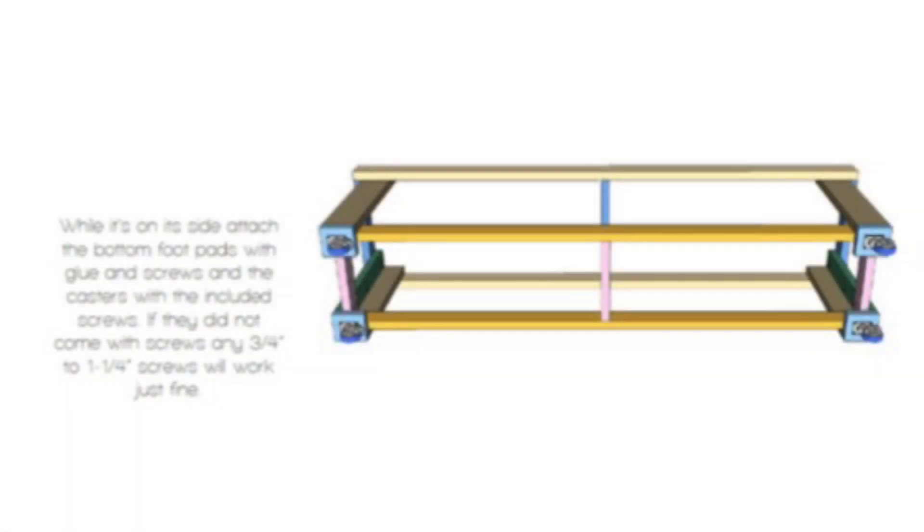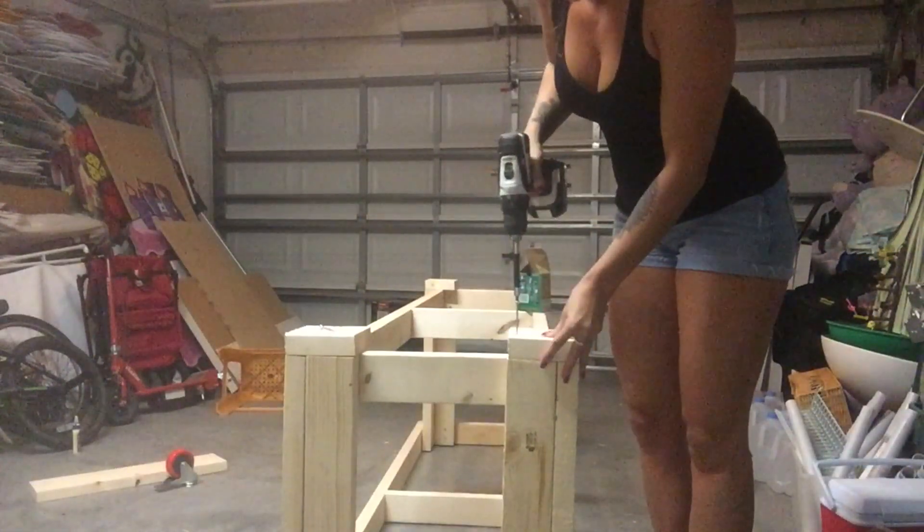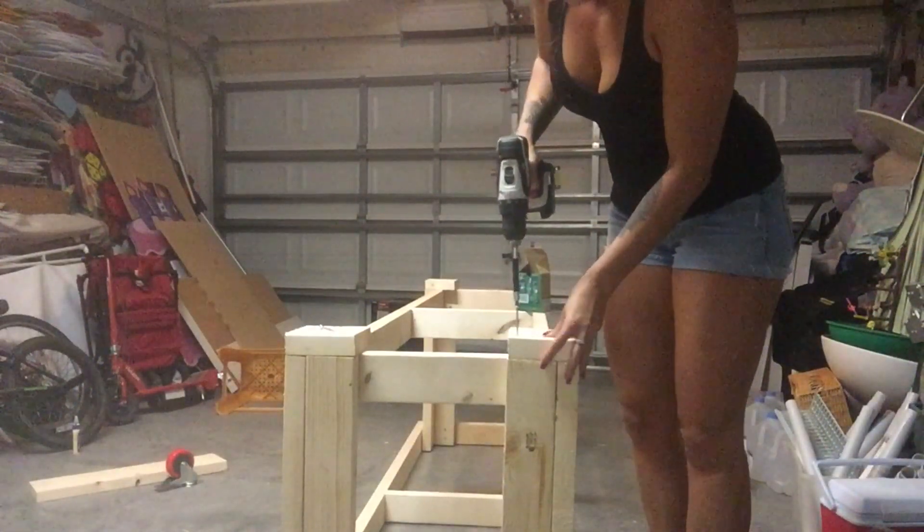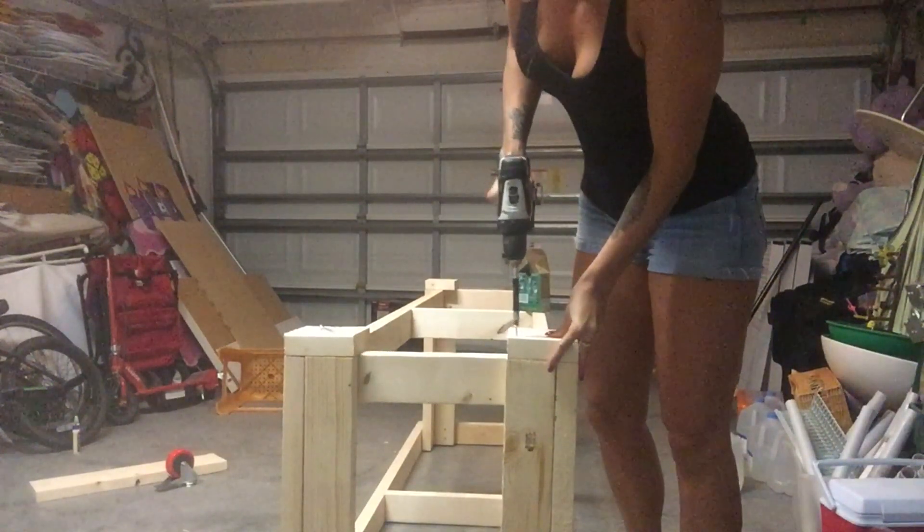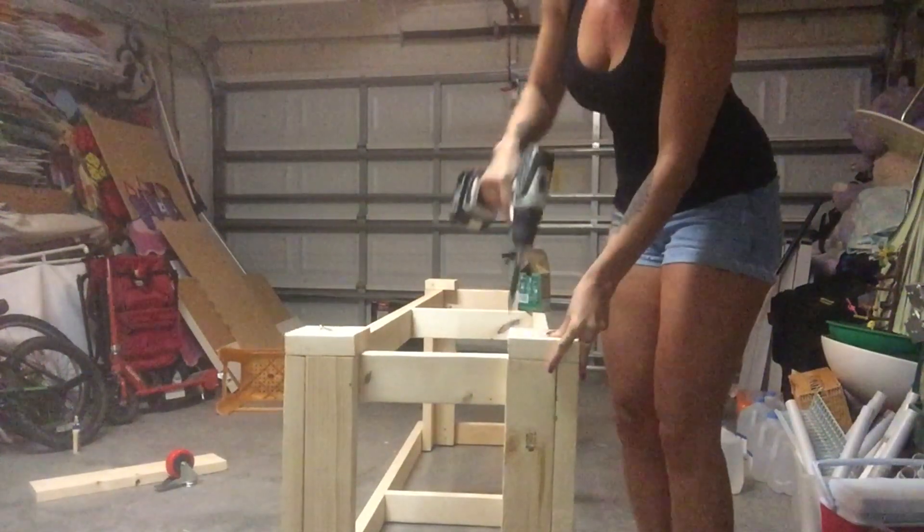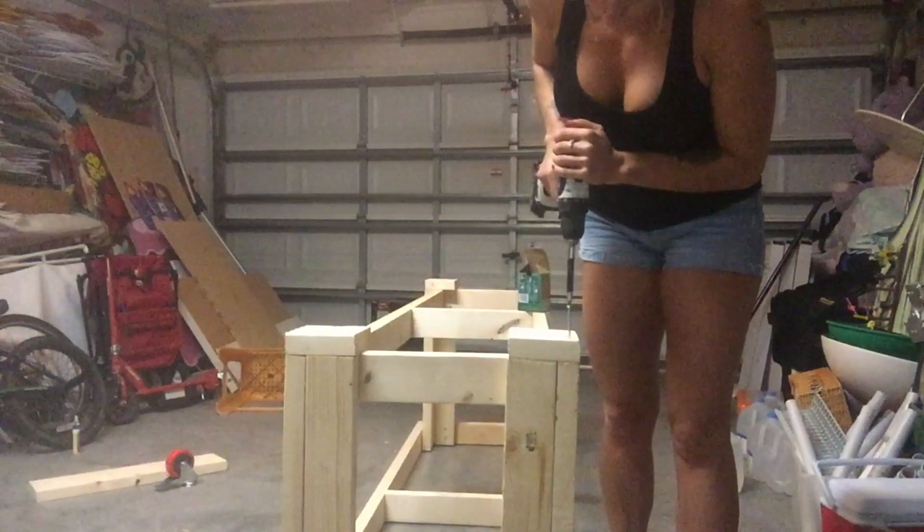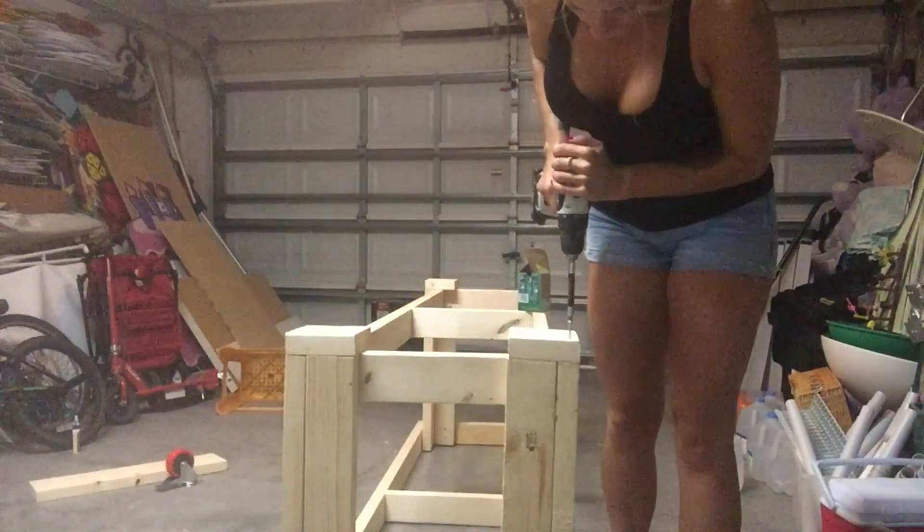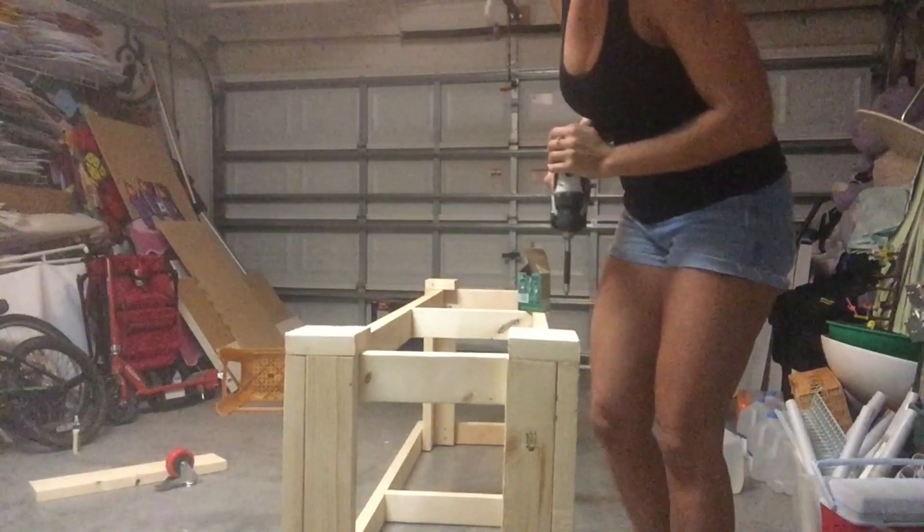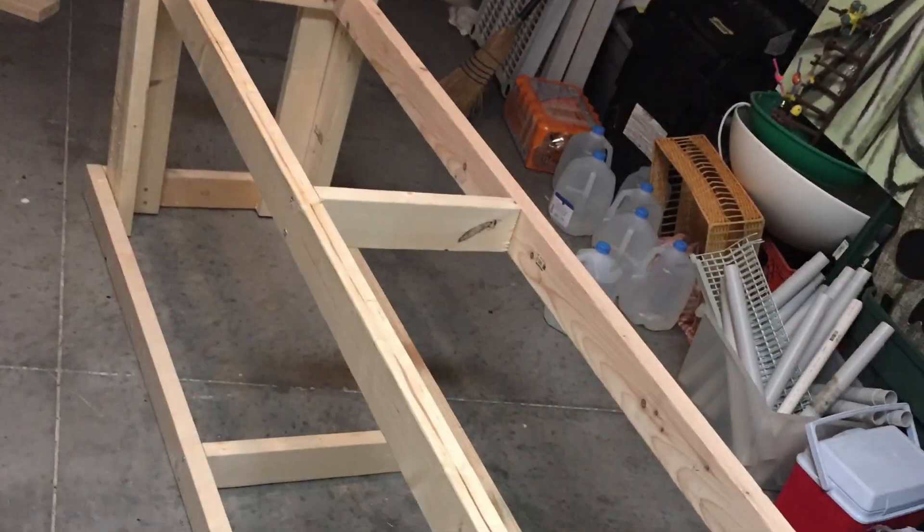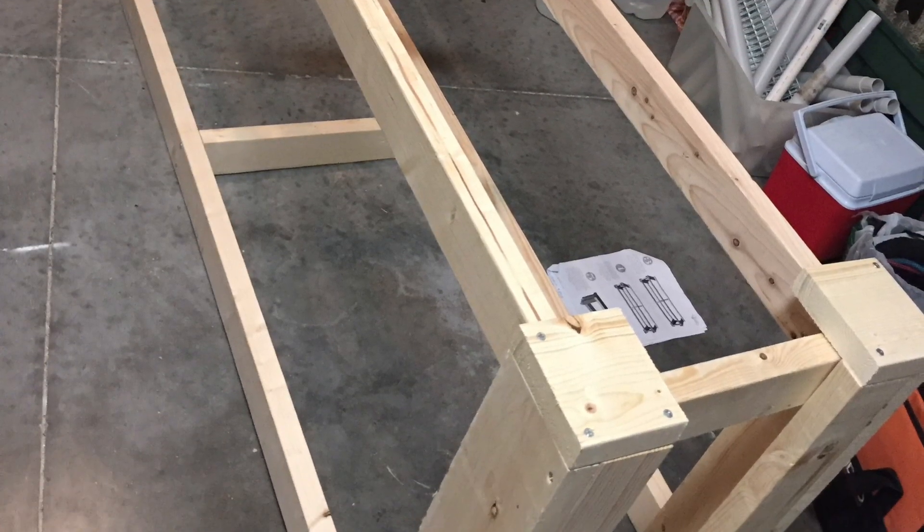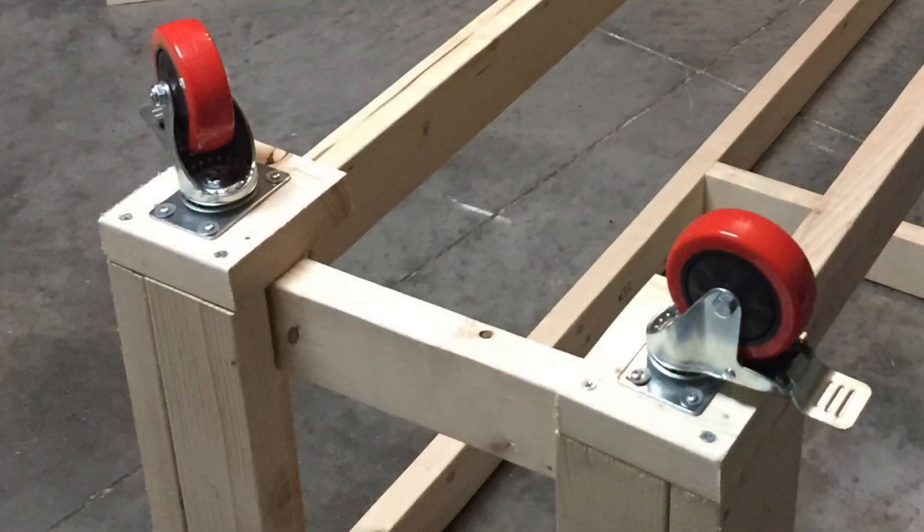Next step is to attach the five inch square blocks on the bottom of the legs. Then I bought four inch caster wheels with brakes and screwed them on to the bottom of the blocks.